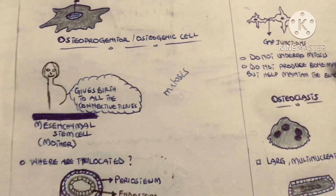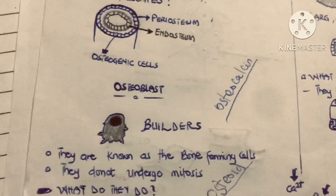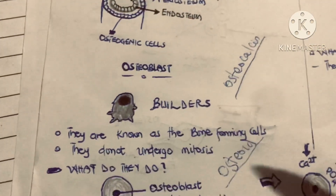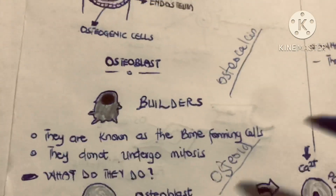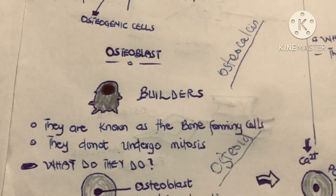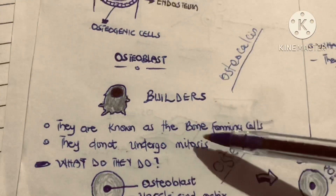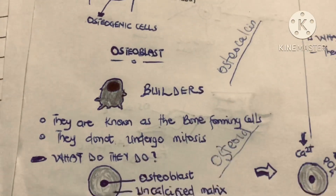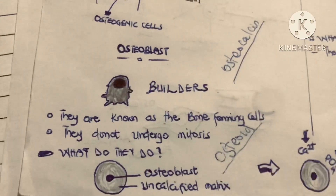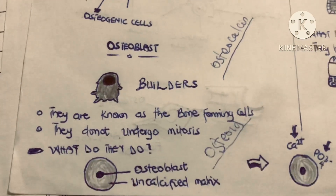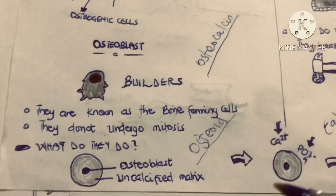The next cell is the osteoblast. Osteoblasts are known as builders — they are the bone-forming cells. Unlike the osteogenic cells, osteoblasts do not undergo mitosis. Instead, they secrete an uncalcified matrix called the osteoid.